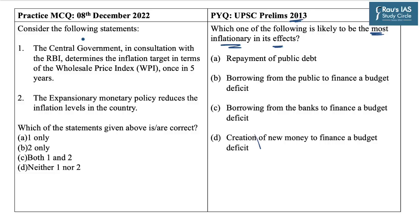The practice question for today says: consider the following statements and identify the correct ones. Statement 1 states that the central government in consultation with RBI determines the inflation target in terms of the Wholesale Price Index once in five years. Statement 2 says that the expansionary monetary policy reduces the inflation levels in the country.